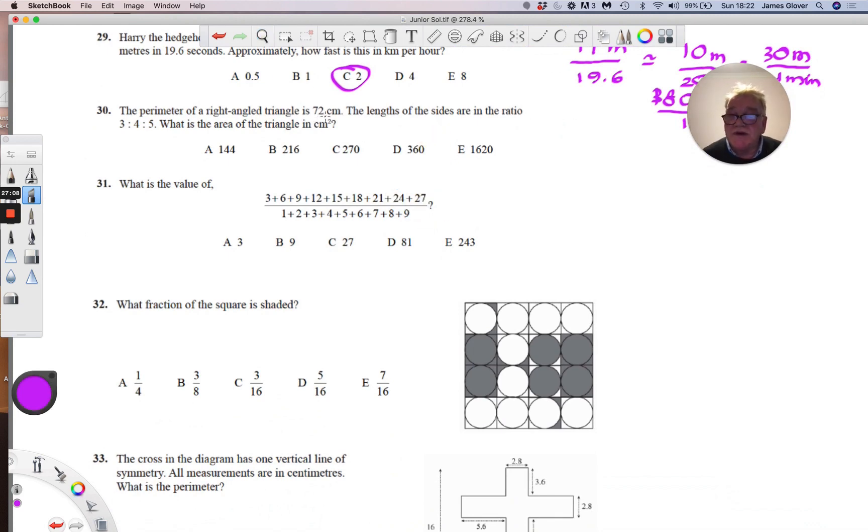And here we have to divide 72 in the ratio 3 to 4 to 5 and then use the answers to get to the area of the triangle. So we have a right angle triangle and we have to divide the total perimeter of 72 in the ratio 3 to 4 to 5. So on adding these three numbers we get the total number of parts that we have to divide by. 4 add 5 add 3 is 12, 72 by 12 is 6. So 1 part is 6 cm, 3 parts will be 18 cm, 4 parts will be 24 cm and 5 parts will be 30 cm.